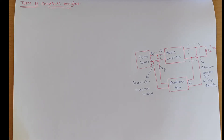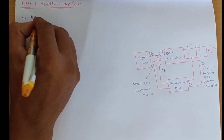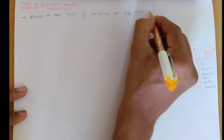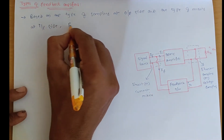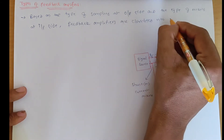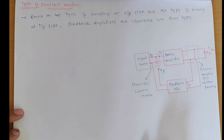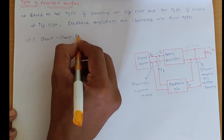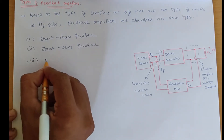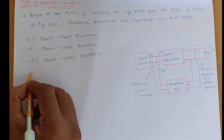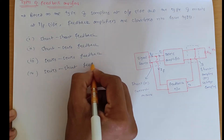We classify the negative feedback amplifiers into four types based on what kind of sampling is at the output side and what kind of mixing is at the input side. The four types are: shunt-shunt feedback, shunt-series feedback, series-series feedback, and series-shunt feedback.